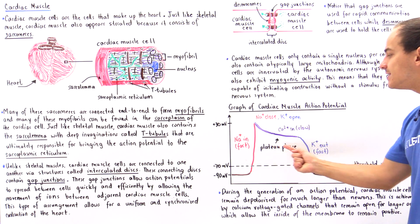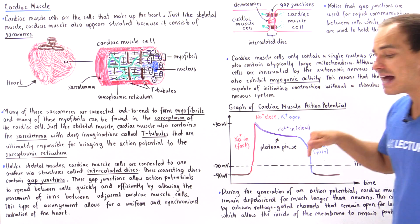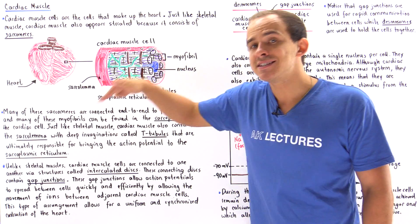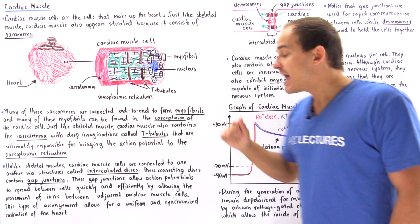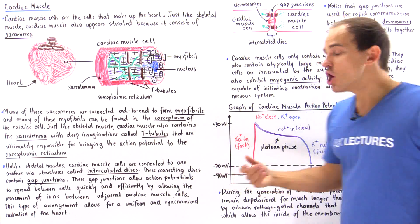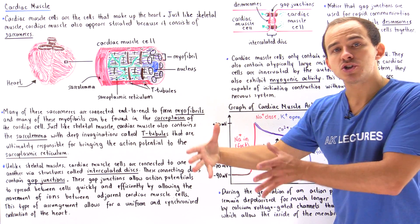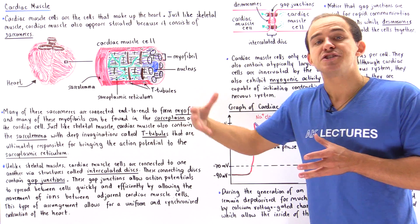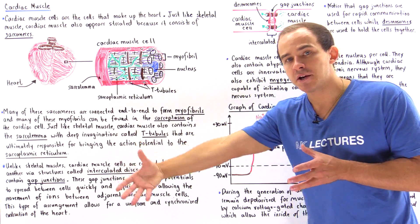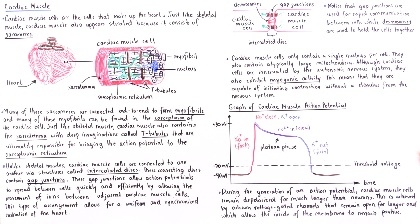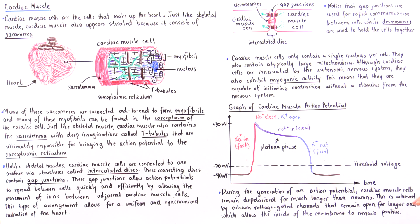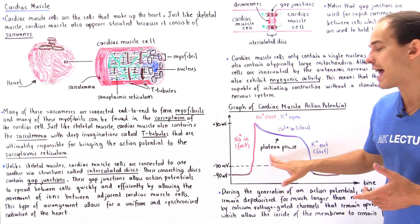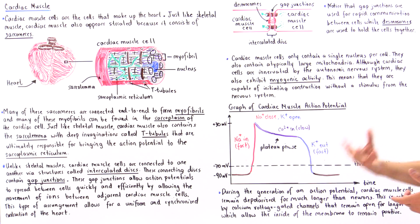Because of this additional voltage-gated calcium channel, calcium ions move into the cell while potassium moves out. Since the potassium efflux carries a larger charge, the inner portion of the membrane stays positive for a longer period, resulting in a longer depolarization period than seen in a neuron. This extended period is known as the plateau phase.